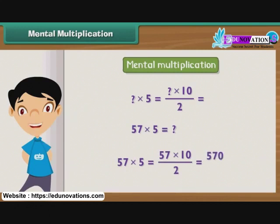Now divide 570 by 2 to get 285 as the result.